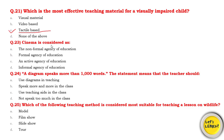Question number 23: Cinema is considered as — a non-formal agency for education, formal agency, active agency, or informal agency? Cinema is an informal agency in which you learn informally. In non-formal education you have scout guides and sports activities. In formal you have the normal school system. Cinema is basically an informal agency — so informal is the right answer.